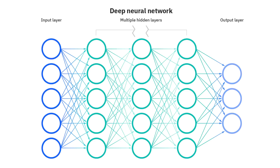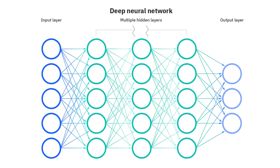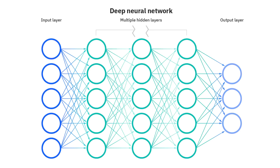Here are the other elements of this network. We start with the input layer, which takes raw input from the domain — no computation is performed at this layer; the nodes simply pass information to the hidden layer. In the hidden layer, as the name suggests, the nodes are not exposed — they provide an abstraction to the neural network, performing all kinds of computation on the features entered through the input layer and transferring the result to the output layer. In the output layer, the final layer of the network compiles the information learned through the hidden layer and delivers the final value as a result.